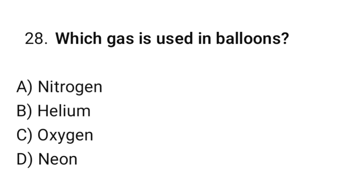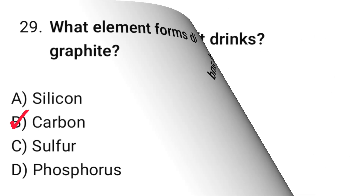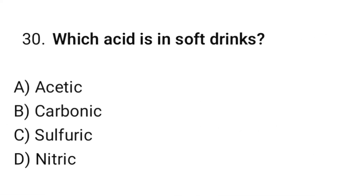Question number 28: Which gas is used in balloons? The correct option is B — Helium. Question number 29: Which element forms diamond and graphite? The correct option is B — Carbon. Question number 30: Which acid is in soft drinks? The correct option is B — Carbonic acid.